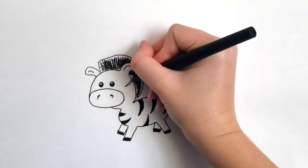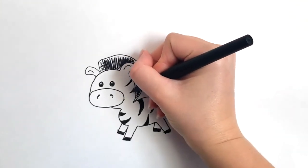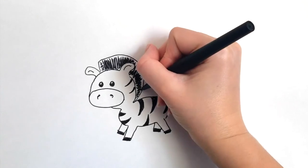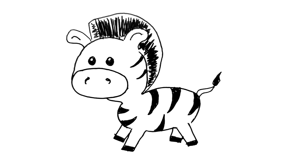And there you go. I'm gonna also add some stripes to his face like that. And voila, you have a baby zebra.